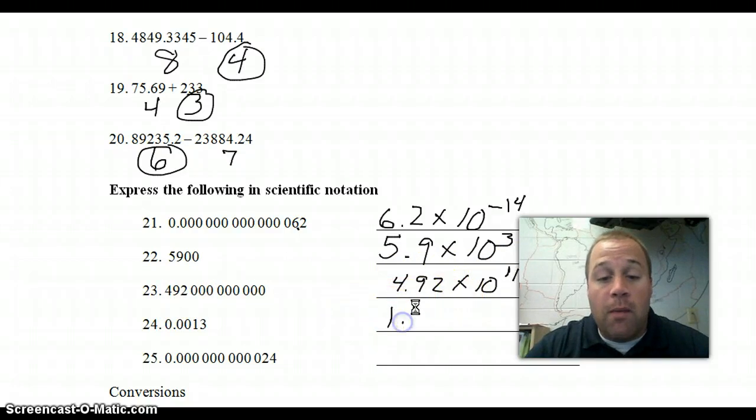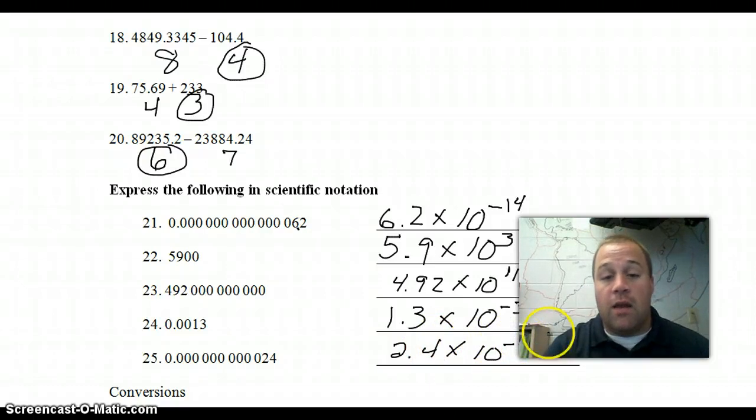The next number between 1 and 9.9 would be 1.3 times 10. We moved it to the right. So, it is going to be negative. And, we moved it 3 spots. The final one, the number between 1 and 9.9 would be 2.4 times 10. Again, we moved it to the right. So, it is negative. And, we get 3, 6, 9, 10, 11 for scientific notation.